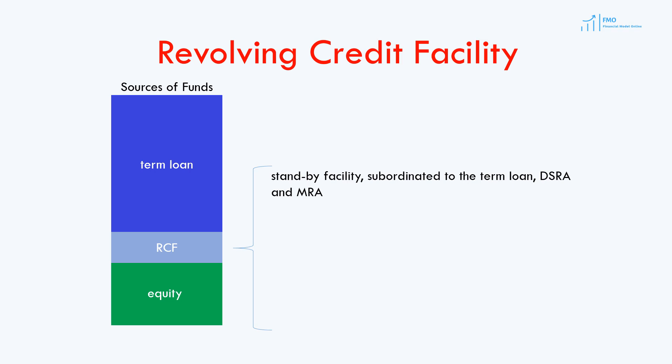This is in contrast to corporate finance, where a revolving credit facility is usually a senior debt. In the end, loan agreements will specify the seniority of the revolver with respect to the term loan, debt service reserve account, and maintenance reserve account, which shall be reflected in the project finance model.